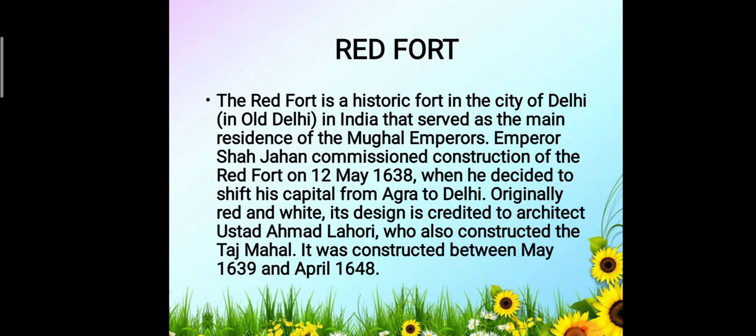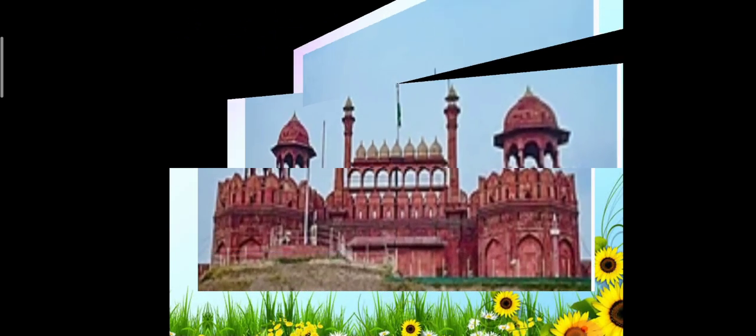The Red Fort is a historic fort in the city of Delhi that served as the main residence of the Mughal Emperors. Emperor Shah Jahan commissioned construction of the Red Fort on 12 May 1638 when he decided to shift his capital from Agra to Delhi. Its design is credited to architect Ustad Ahmed Lahori, who also constructed the Taj Mahal. It was constructed between May 1639 and April 1648. The fort included the King's Palace, living quarters, Diwan-e-Aam for local people, and Diwan-e-Khas for the ministers of the King.